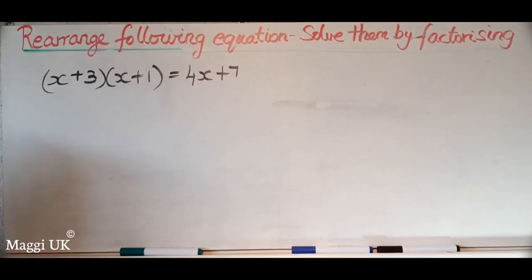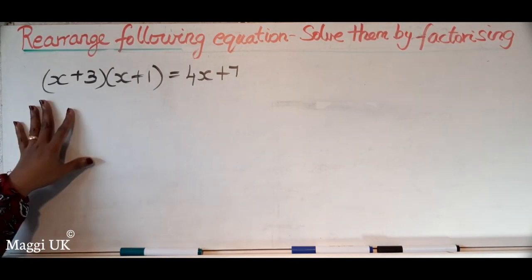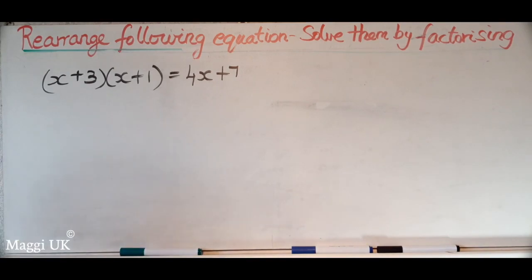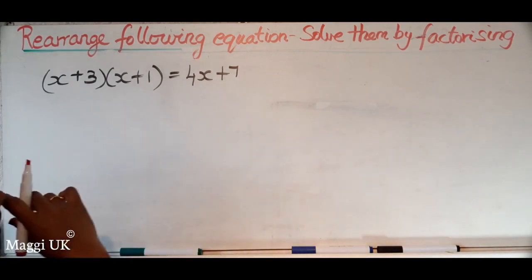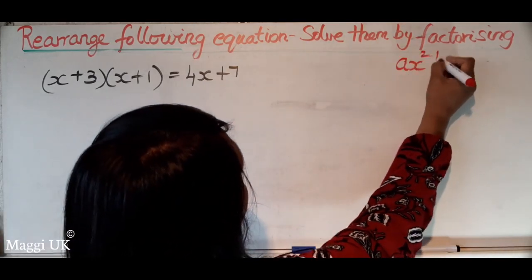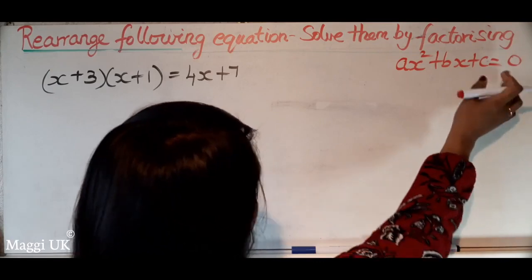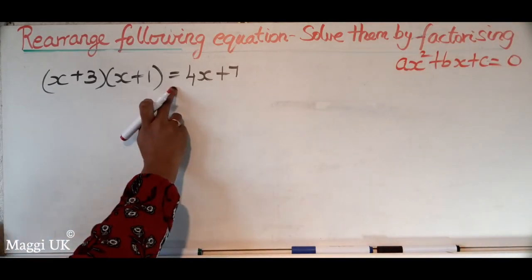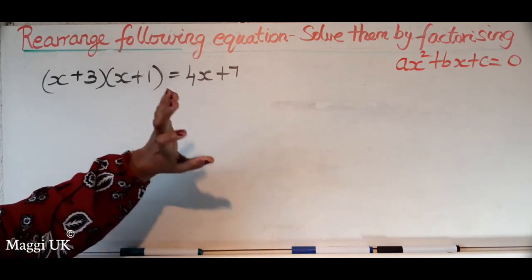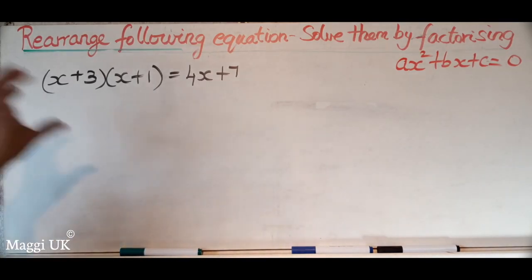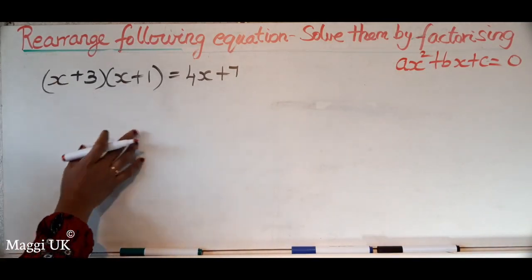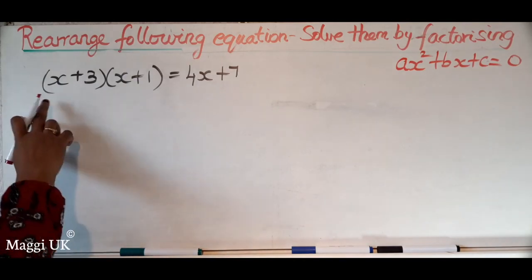Let's begin. If you see this one, I have one side already factorized and on the other side we have some numbers with an x term. A quadratic equation is in the form ax² + bx + c = 0. This side has some kind of expression given, so we are going to bring it into that form first.